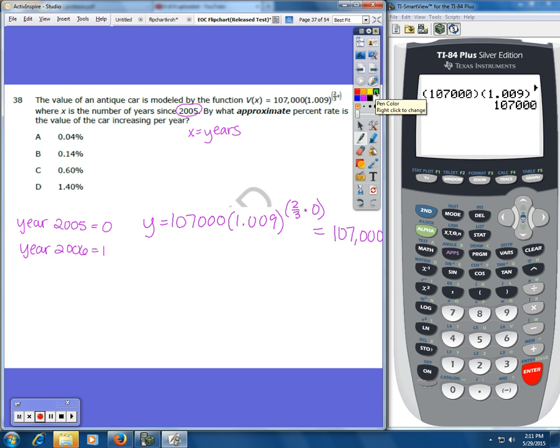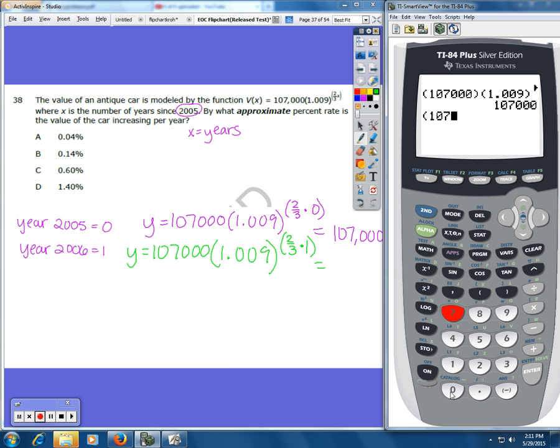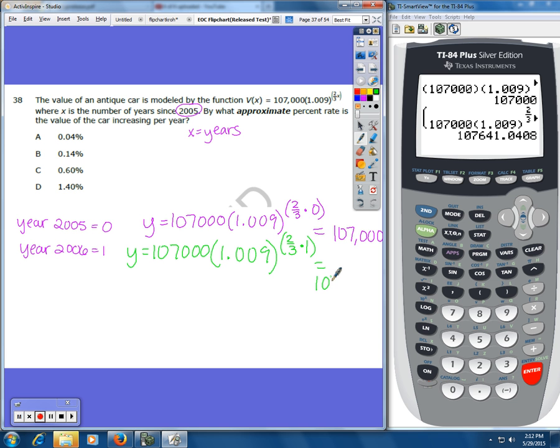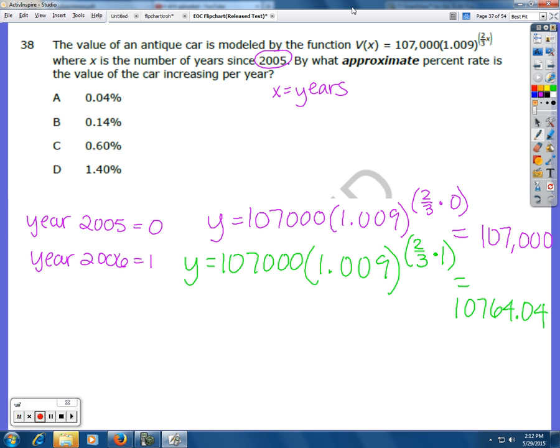Next, we're going to plug in one for the year. Let's see what that gives us. 107,000 times 1.009 raised to the two-thirds times one. And that gave us 107,641.04. Now, we're looking for the percent that it's increasing per year. So we are going to take...